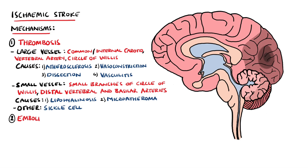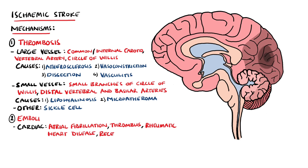Emboli are entities that travel in the blood and can be part of a thrombus that has broken off. They can be fat, air, cancer, or clumps of bacteria. Most commonly, the source of the embolus is the heart, due to atrial fibrillation, atrial or ventricular thrombi, rheumatic heart disease, recent myocardial infarction, or even recent coronary artery bypass grafting.